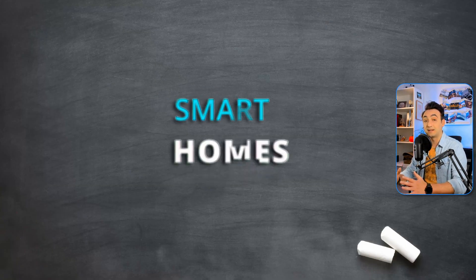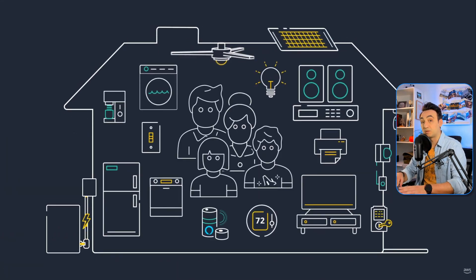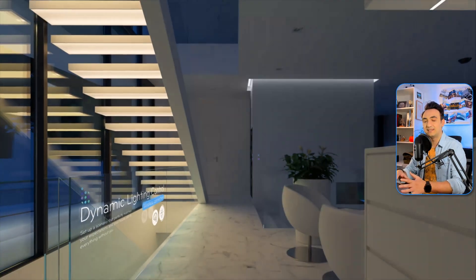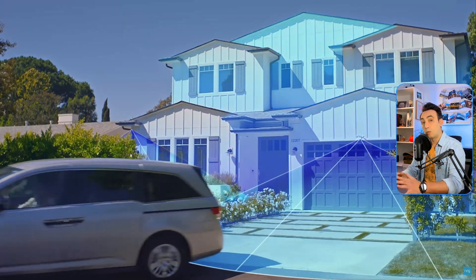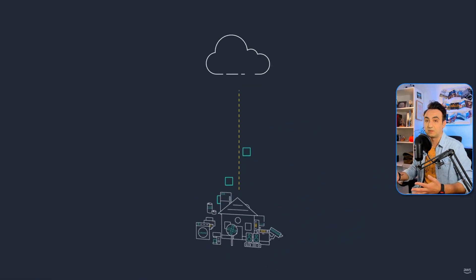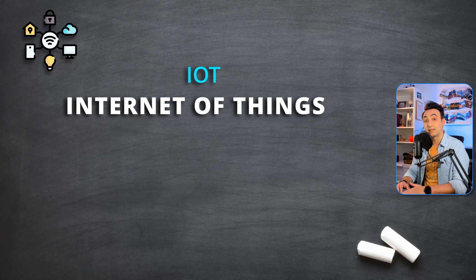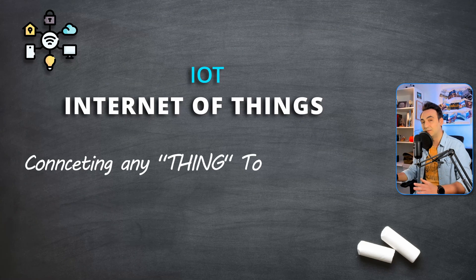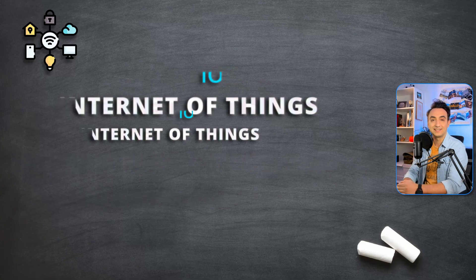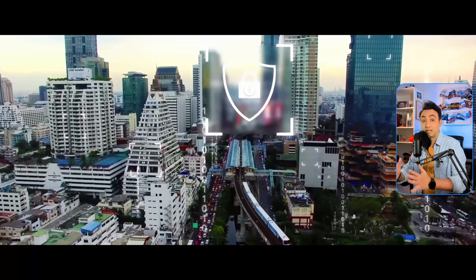Everything we do online is now stored and tracked as data. Not only our smartphones and computers are connected to the internet and generate data, but we also have smart homes. We can connect any device at home to the internet — smart appliances, smart lighting, smart fitness devices, voice devices, security systems. All those devices can generate massive amounts of data, and this is what we call the Internet of Things — IoT. IoT is the concept of connecting any device to the internet in order to generate and exchange data.